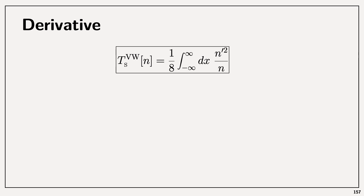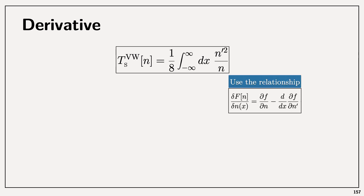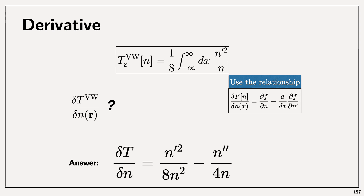This is actually not a local functional; it's a semi-local one because it depends on the first derivative of the density. We can use the relationship we saw in the screencast for the functional derivative — this is the general formula — and we can calculate the functional derivative of T with respect to n. Applying the relationship to the functional derivative of the kinetic energy is pretty elementary; I'm going to let you do it, but the answer is this. I'd like to attract your attention to the fact that even for this very simple one-electron problem, the functional derivative of the kinetic energy is not a trivial function.